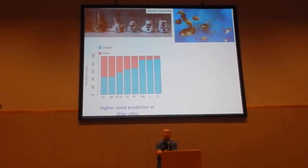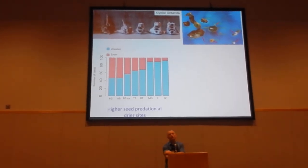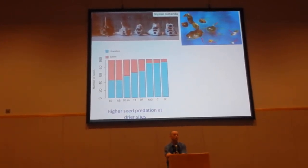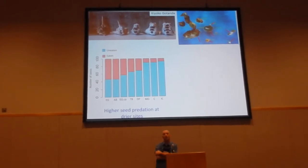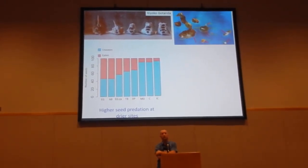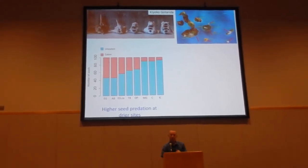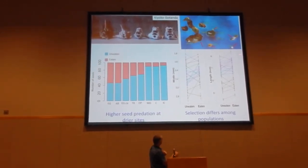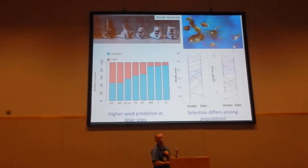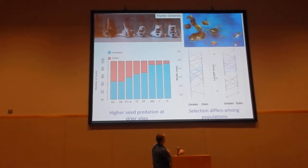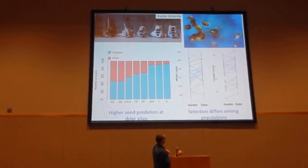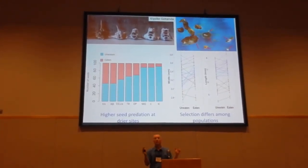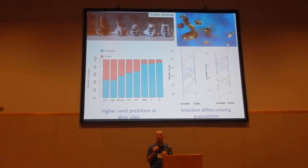Here's some preliminary data: there are different levels of seed predation on Tribulus at different locations, and predation on this plant is greatest when conditions are driest — which is expected because it's a hard plant to get into and finches largely ignore it when wet conditions provide abundant alternative food. In addition, selection is varying across space. Looking at different populations across multiple islands, with different lines corresponding to different populations, there is no single trend in which Tribulus properties predict being eaten — which is actually a good thing, because it means there is spatial variation in natural selection.